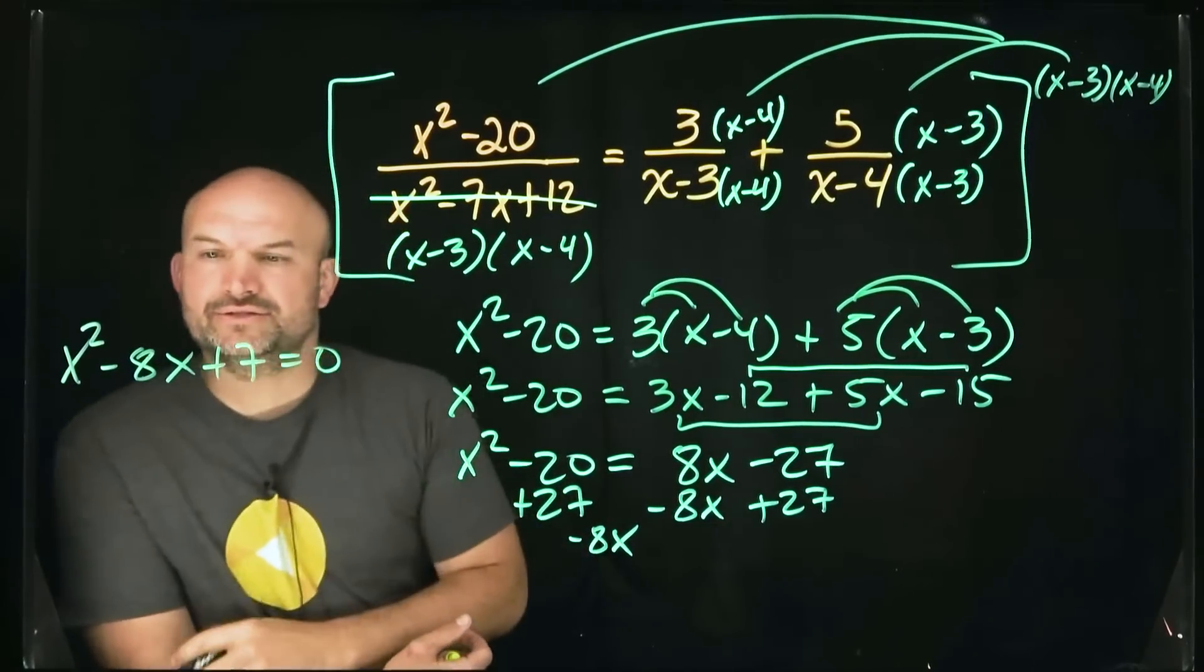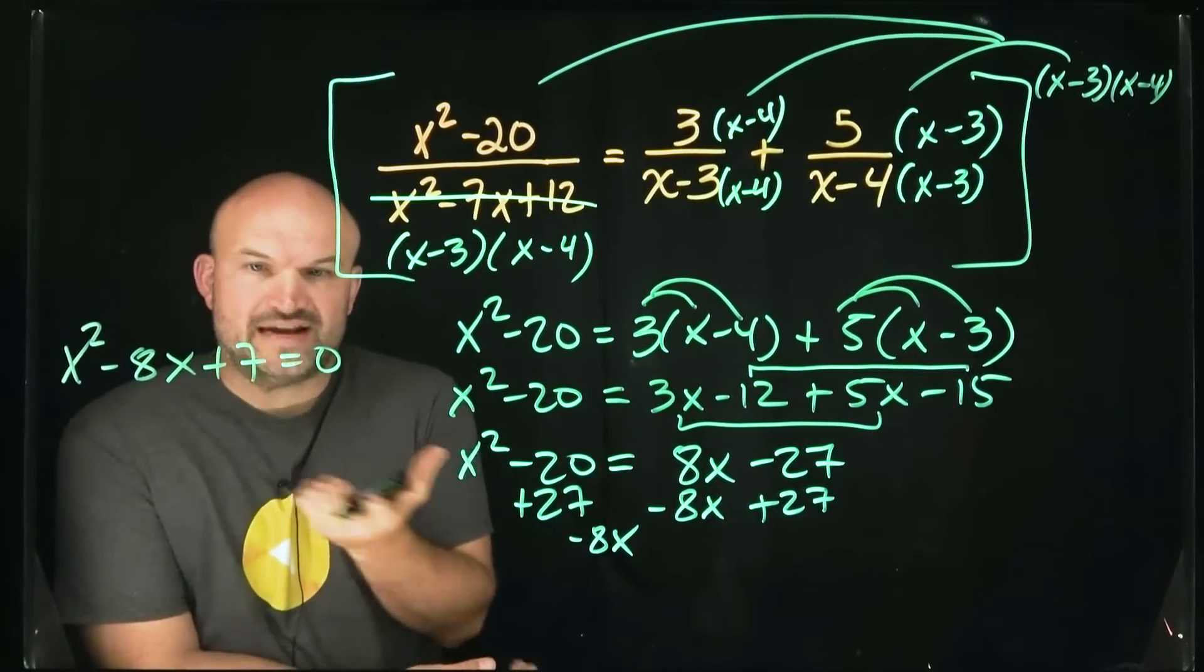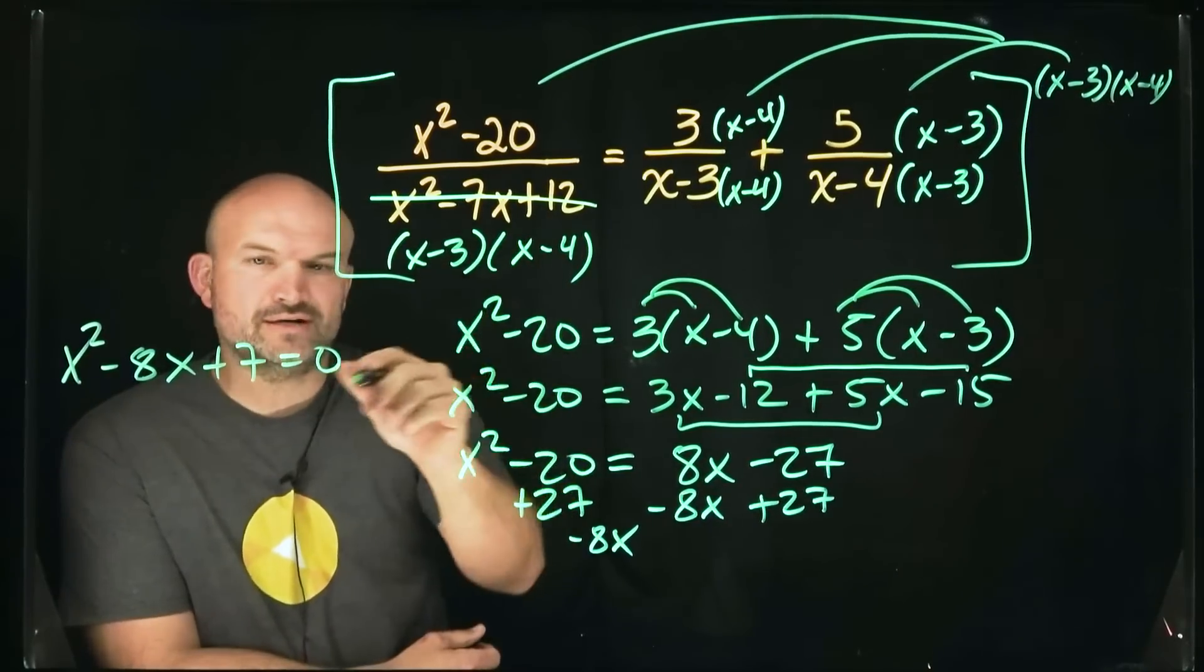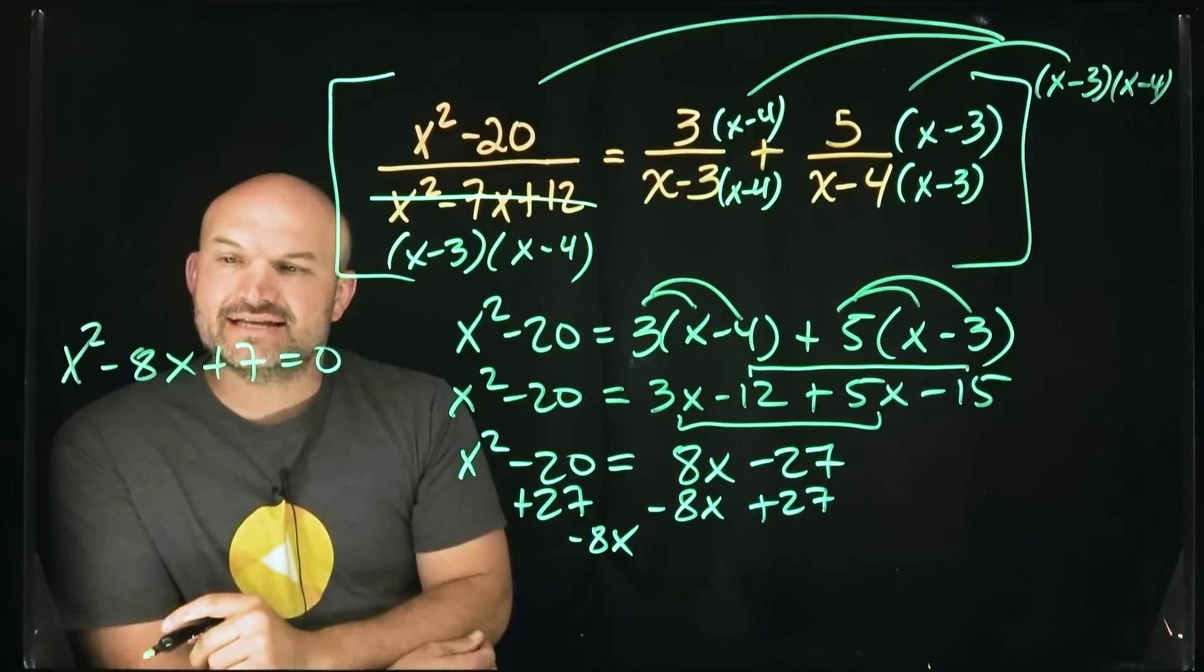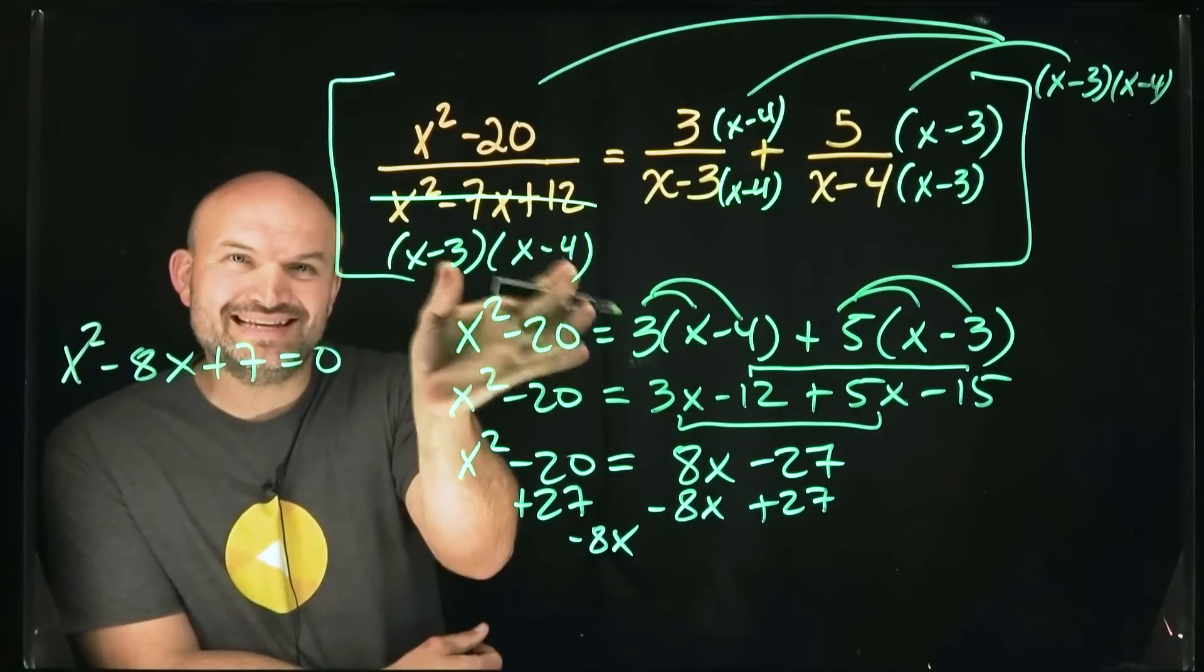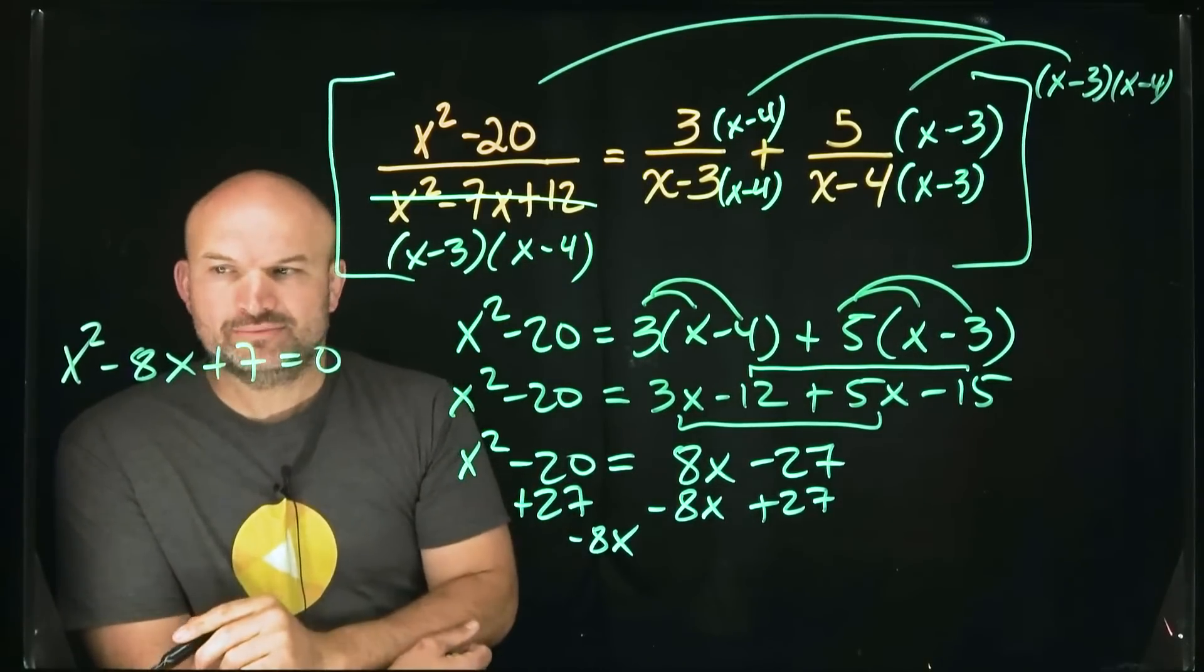And so now what I want to be able to do is say, can I factor this? How can I solve this? So just like we were looking over here when we were trying to factor this, we're saying what two numbers multiply to give me 7 and that are going to add to give me negative 8. And again, we're thinking of them as being a product of two binomials.